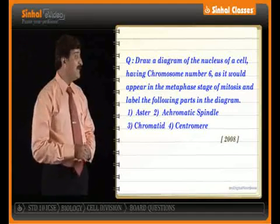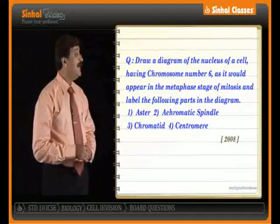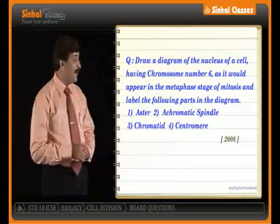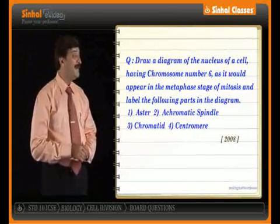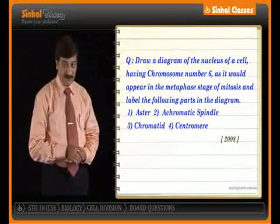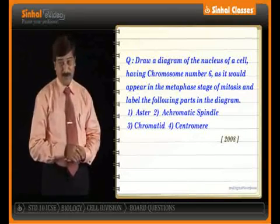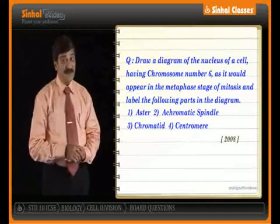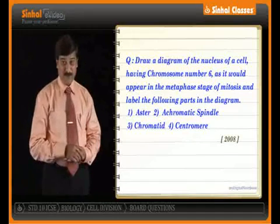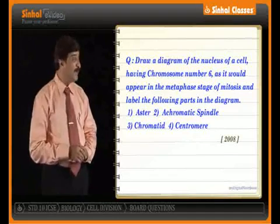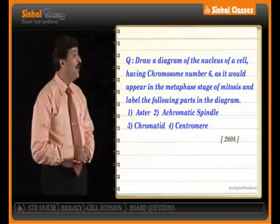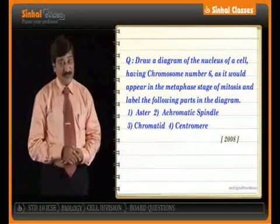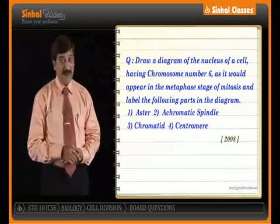The labeling is asked for asters, the achromatic spindle, the chromatid, and the centromere. The most important thing is that you have to draw the diagram showing the number of chromosomes.